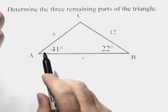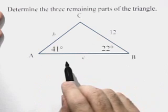In this problem we're going to solve a triangle given two angles and the length of the side opposite one of the angles. We want to determine the three remaining parts of this triangle.